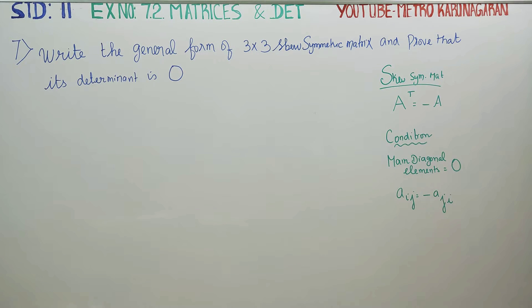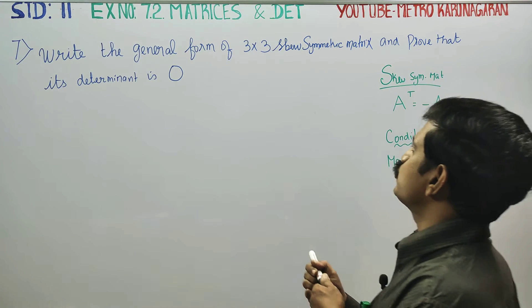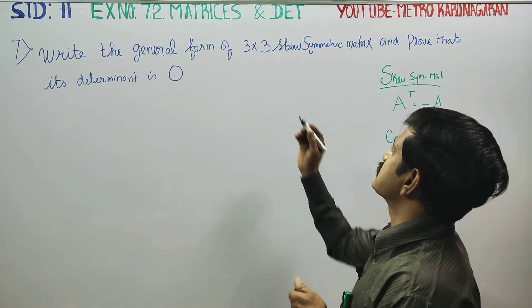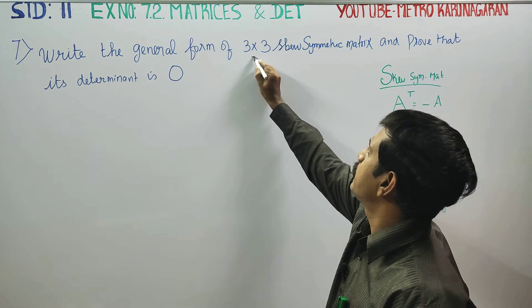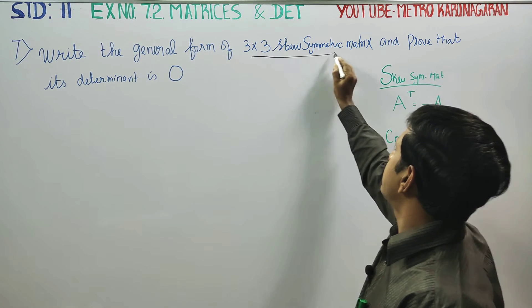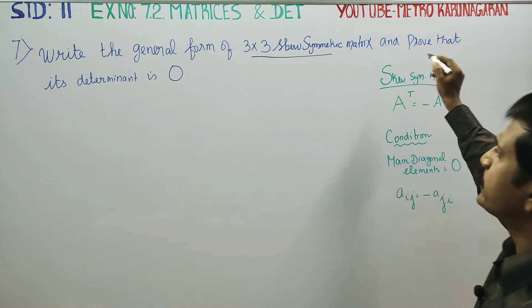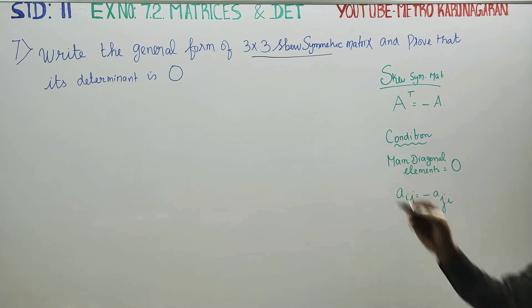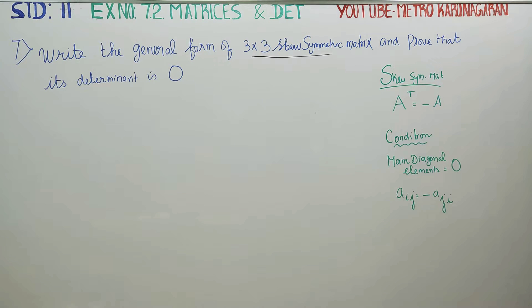Dear 11th standard students, in exercise number 7.2, write the general form of a 3 by 3 skew matrix and prove that its determinant value is 0.